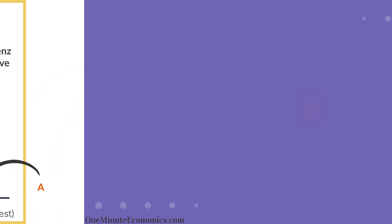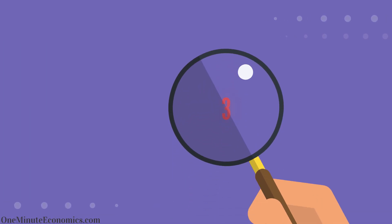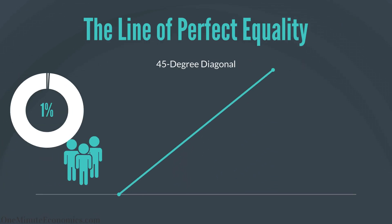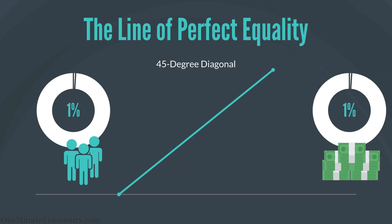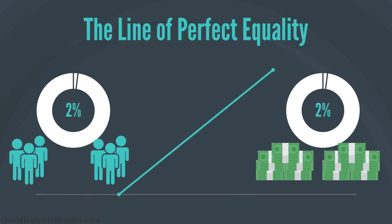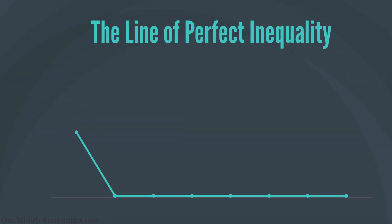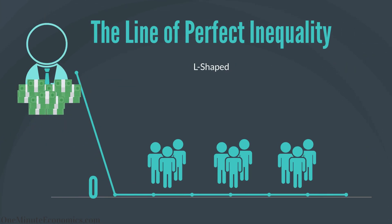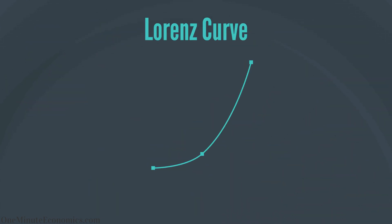Again, ordered by income. Step 3, identifying three important elements: (a) the line of perfect equality — a 45-degree diagonal, since 1% of the population earns 1% of the income, 2% earns 2%, and so on, because everyone has the same income; (b) the line of perfect inequality — basically an L-shape, since everyone earns zero aside from the richest person who earns 100%; and (c) the aforementioned Lorenz curve.